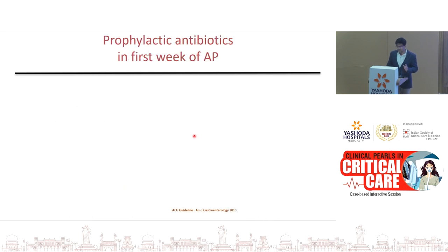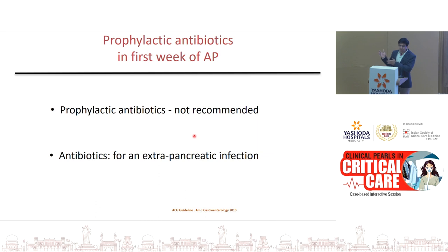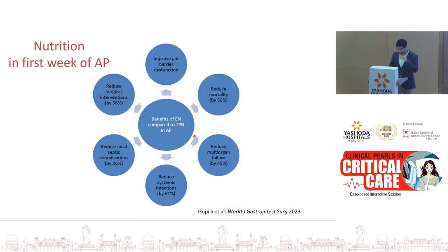For the patient with low-grade fever, prophylactic antibiotics are a big no — not recommended at all unless there is an extra-pancreatic infection such as pneumonia, UTI, or cholangitis. Regarding nutrition: in the first week of acute pancreatitis, nutrition is the only intervention proven to have a mortality benefit, and it also reduces the risk of future infections.